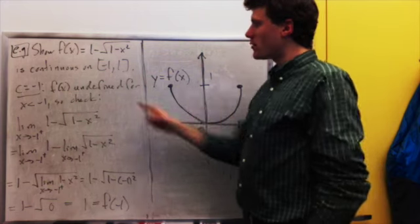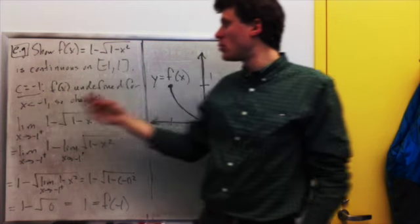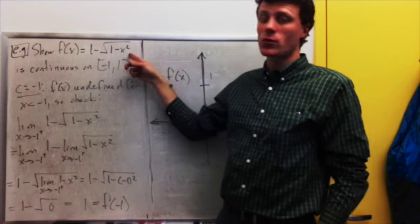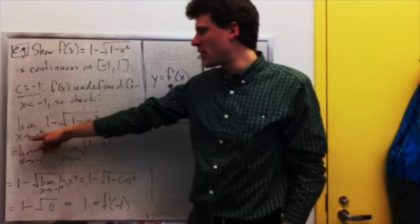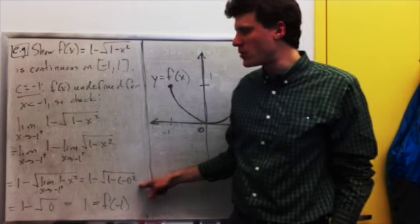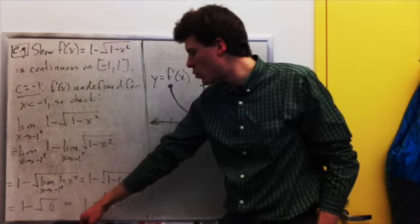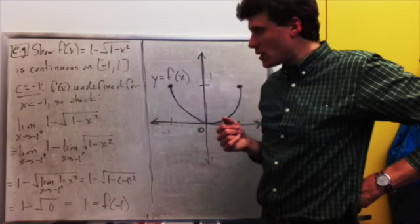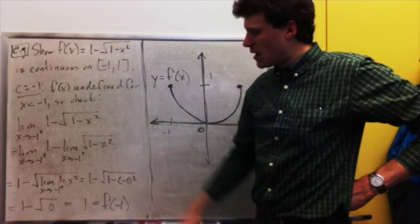We still have to worry about the endpoints at negative 1 and 1. When c equals negative 1, f of x is undefined for x less than negative 1 — I can't plug in a number less than negative 1 because 1 minus x squared would be less than 0 and we can't take the square root. So all I care about is continuity from the right. I take the limit as x goes to negative 1 from the right, run through the same steps as before, and at the end I get 1 minus the square root of 0, which is 1. And if you plug negative 1 into this function, you get 1.